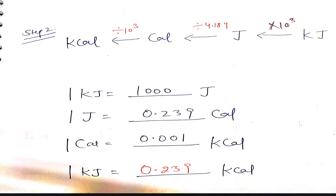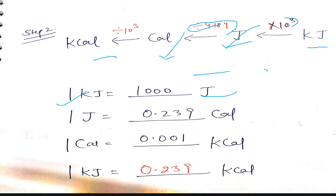Now for the backward step: kilojoule → Joule → calorie → kilocalorie. If you have to change 1 kilojoule to Joule, you multiply by 10 to the power 3. If you want to convert Joule to calorie, you divide by 4.184. For example, if we have 1 calorie and want to change it to kilocalorie...